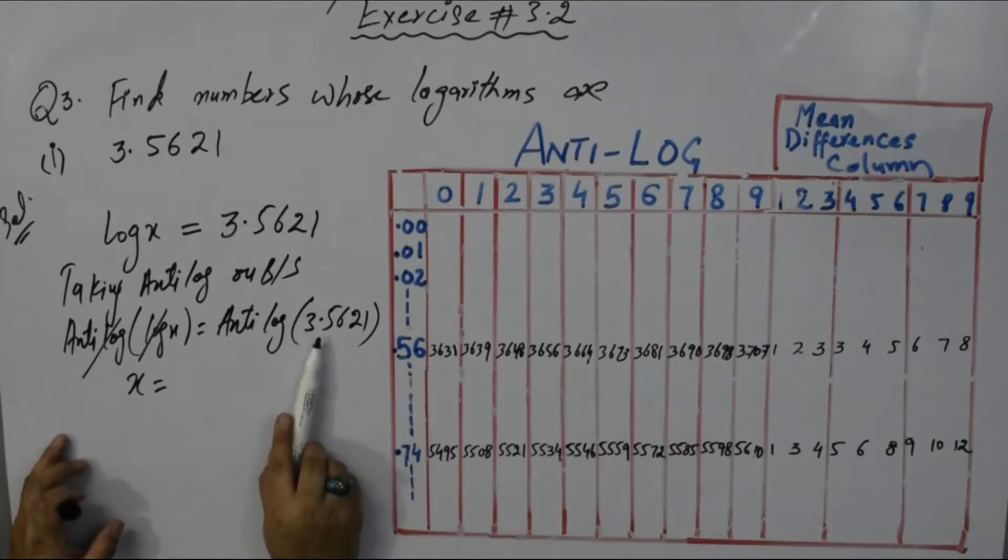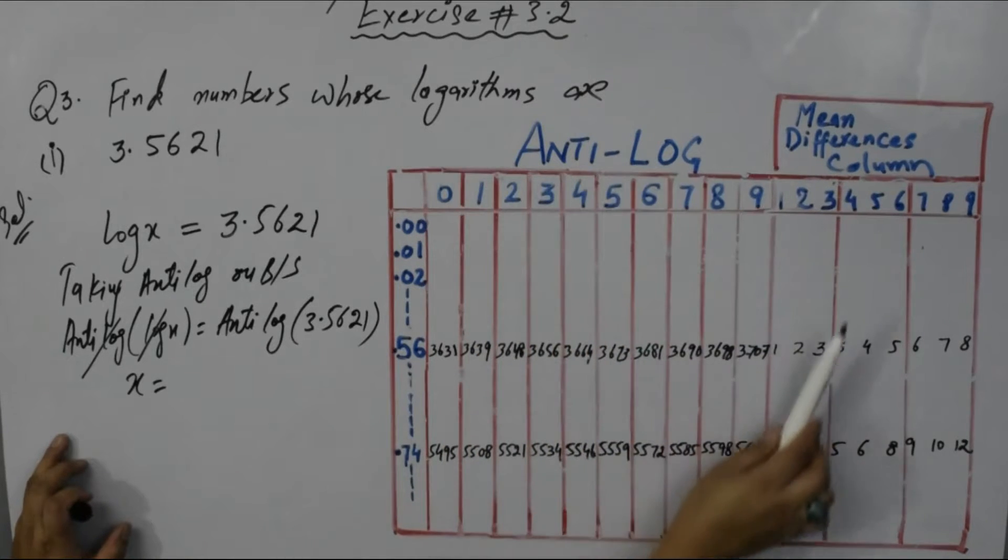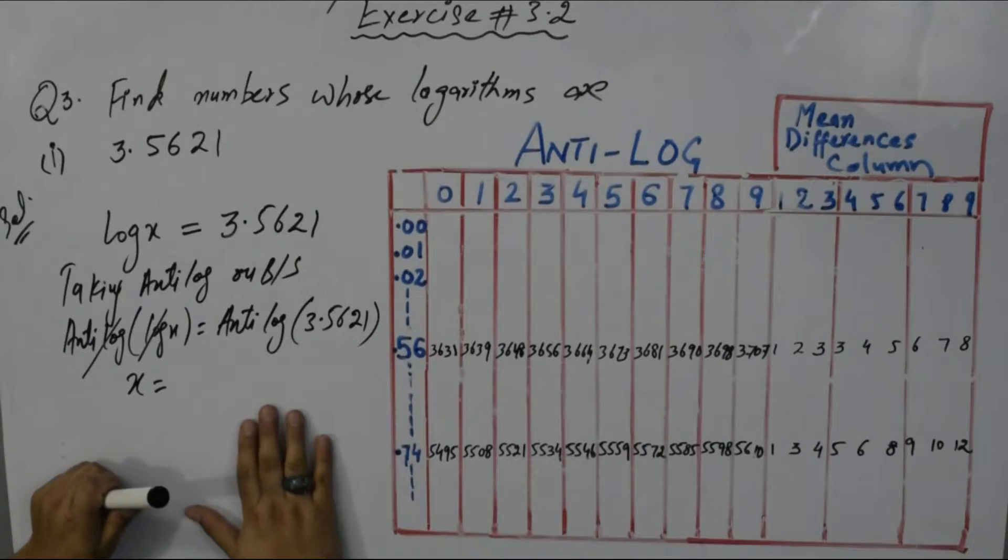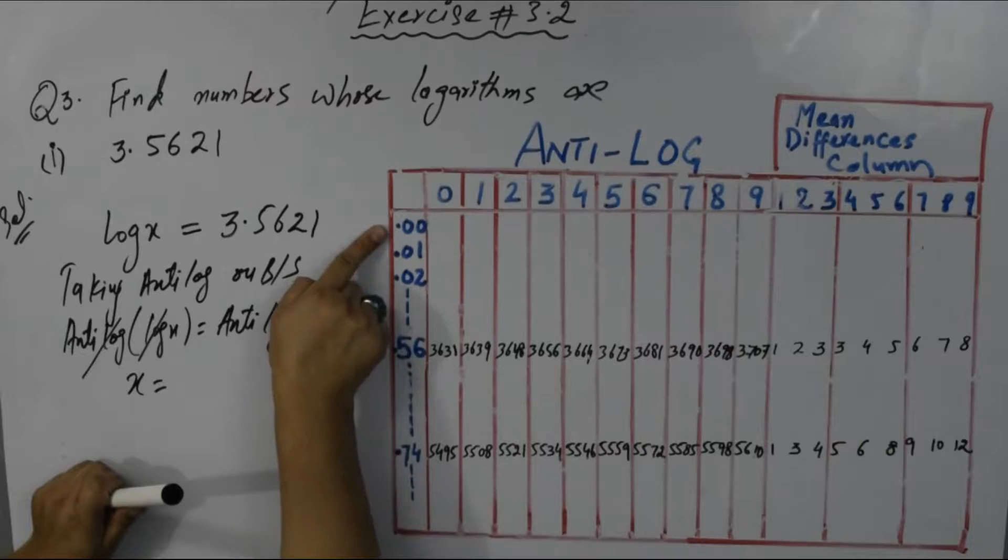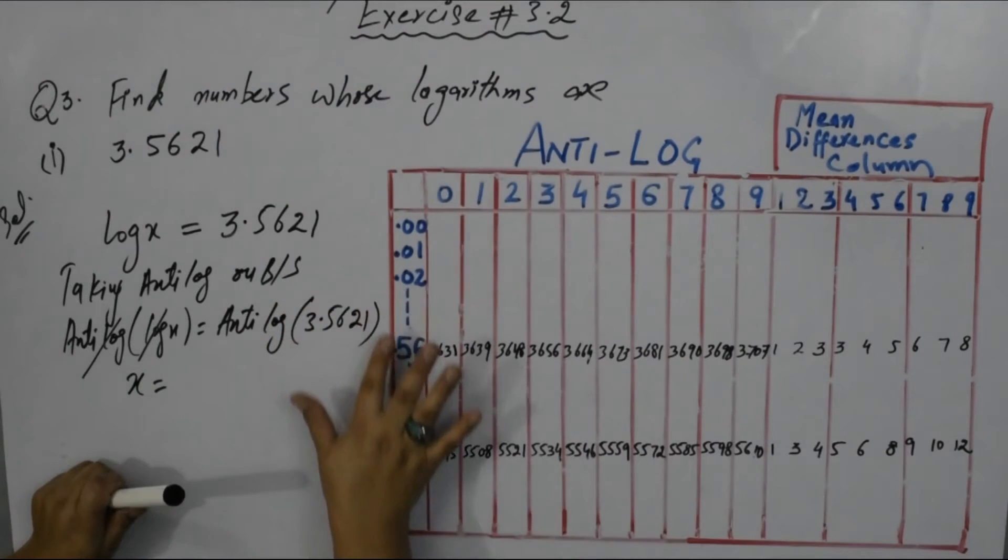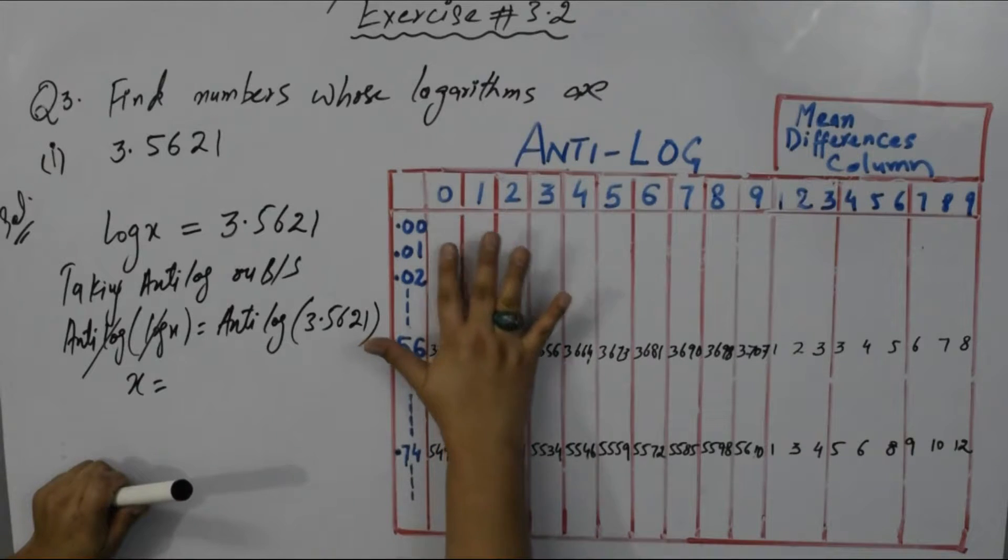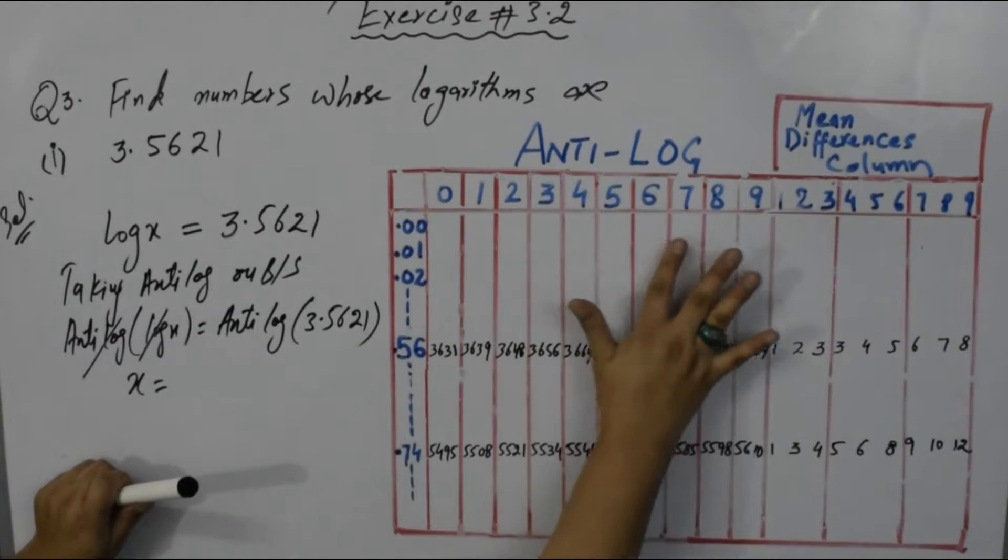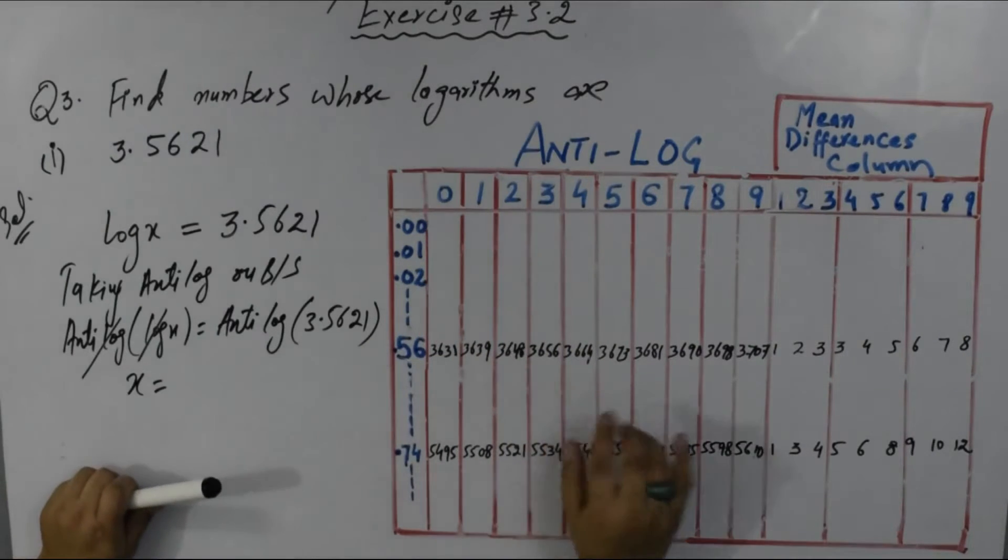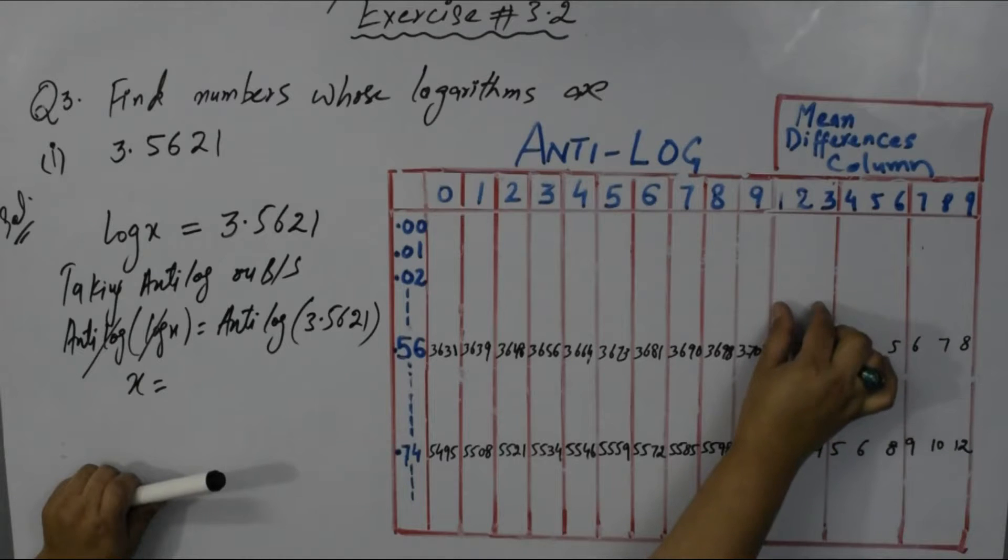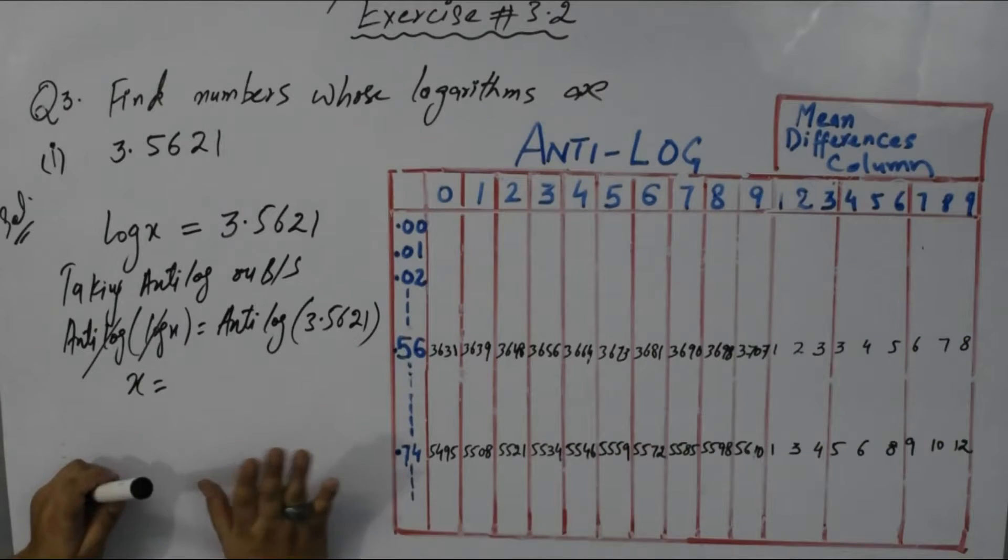Now x equals - we have to find this anti-logarithm of this number by using anti-log table. This anti-logarithm table has decimal point 0, 0.1, 0.2 up to last digit 0.99. It has columns 0 through 9, plus mean differences column with 1 through 9.